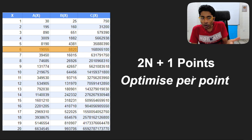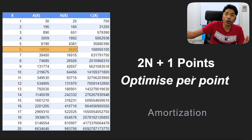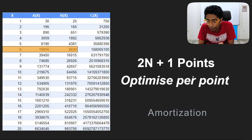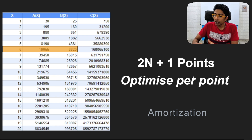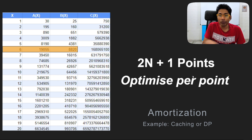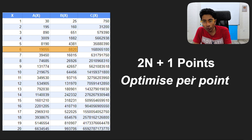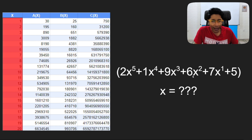Instead of optimizing each point individually, we use amortization — the work you do for some points does half the work for others. Finding the first few points makes the rest apparent. This is like caching or dynamic programming, where an expensive initial computation makes future values fast to calculate. The key insight is to choose the 2n+1 substitute values w₁, w₂, w₃, … cleverly — not just 1, 2, 3, 4, 5.